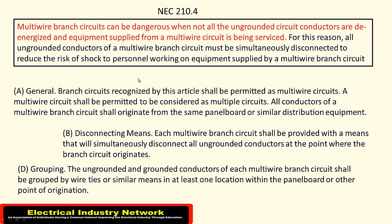In general, the branch circuits recognized by the article shall be permitted as multi-wire circuits. All conductors of the multi-wire branch circuit shall originate from the same panel board or similar distribution equipment. The disconnecting means basically — if you have three circuits on one neutral, they all have to be shut off at the same time.